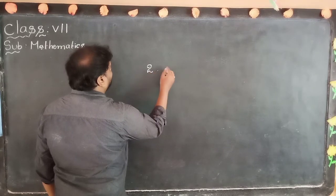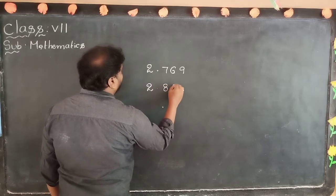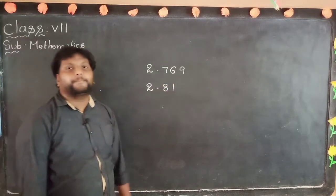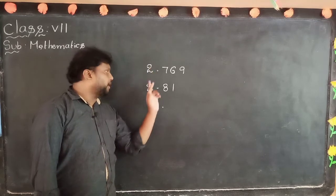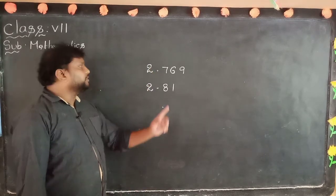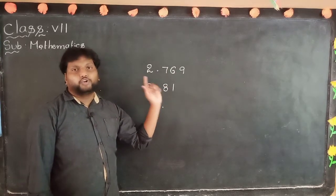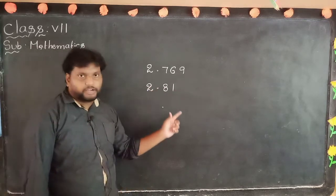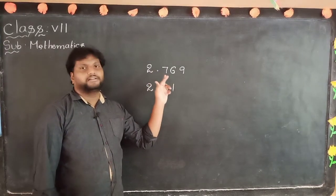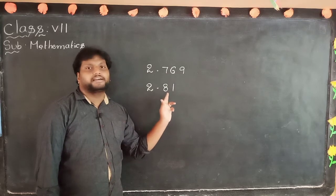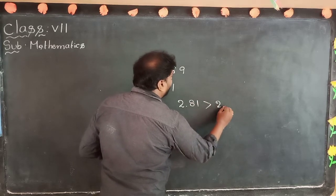For example: 2.769 and 2.81. To compare any two numbers, first check the whole part. If the whole part is equal, then we go to the decimal part. In the decimal part, check the tenth place — which is the bigger number. Here we are having 7, here we are having 8, so 2.81 is more than 2.769.